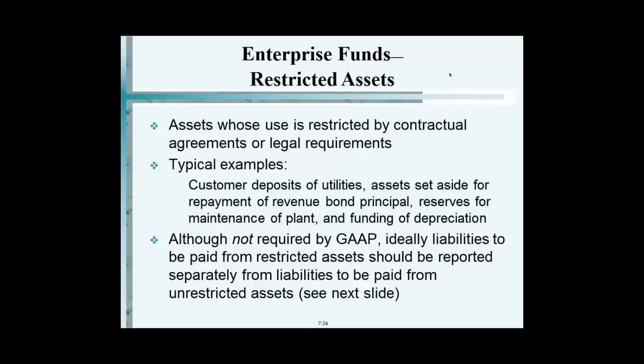All the cash received from customers as deposits shows up as a restricted asset on the balance sheet, and you must have a corresponding liability — customer deposits. So if you receive deposits of $1 million from customers, you debit cash and credit customer deposits. That's all it is.